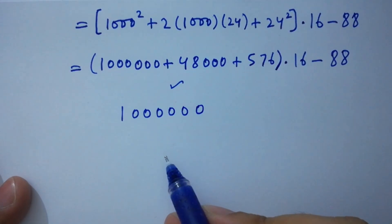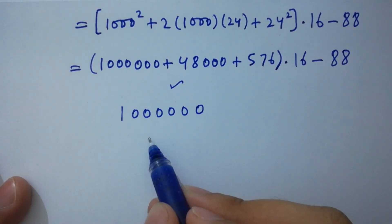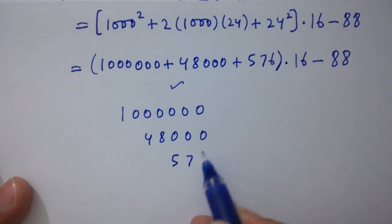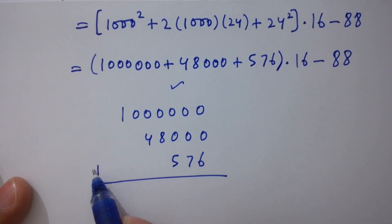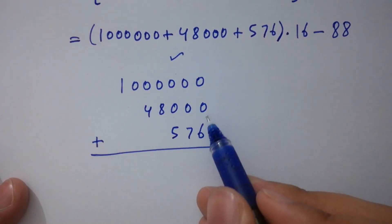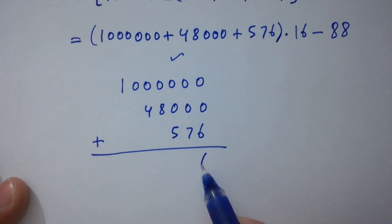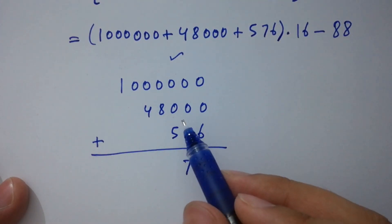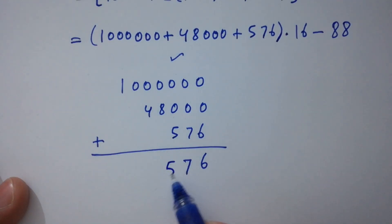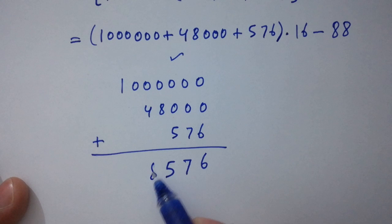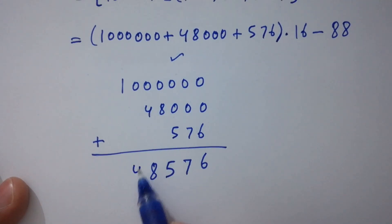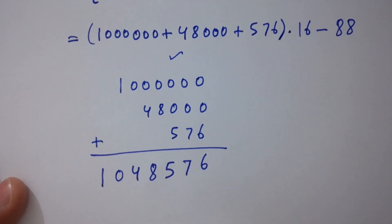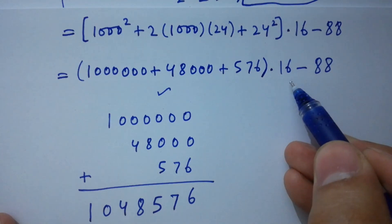We have 1,000,000 plus 48,000 plus 576. Adding them: 0 plus 0 plus 6 is 6; 0 plus 0 plus 7 is 7; 0 plus 0 plus 5 is 5; 0 plus 8 is 8; 0 plus 4 is 4; 0 as it is; and 1 as it is. That gives 1,048,576. Now multiply it by 16.